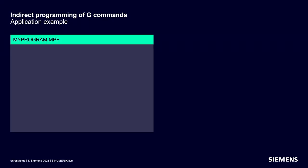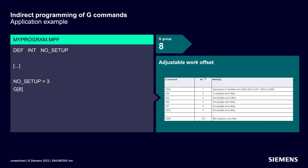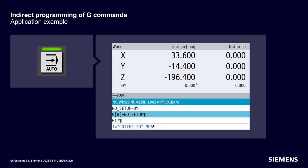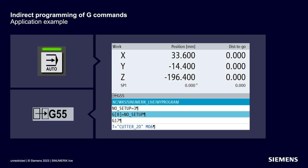Let's look at an application example of indirect G command programming. The idea is to react flexibly to different numbers of clamping operations in the machine, requiring different work offsets depending on the manufacturing job. First, you define an integer variable for the number of clamping operations — later assigned the exemplary value 3, which could be the transfer value of a user cycle. The 8th G-code group is then addressed with G[8], the group with the adjustable work offsets. The command is assigned the value of the user variable, that is 3. The comparable direct language command would be G55. If you start the program in automatic mode, you'll see that G55 — the third command in the 8th G-code group — is active.